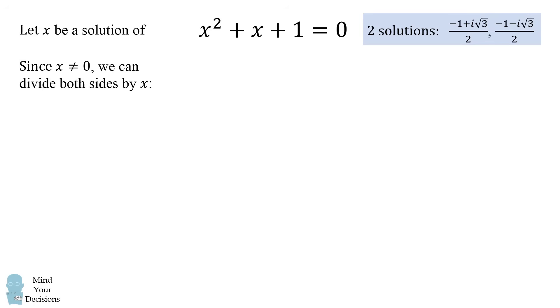Now x is not equal to 0, so it is valid for us to divide both sides by x. Now we have a new equation x + 1 + 1/x = 0. This equation again has the same two solutions. So far so good.